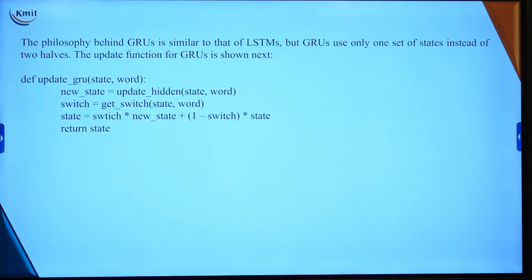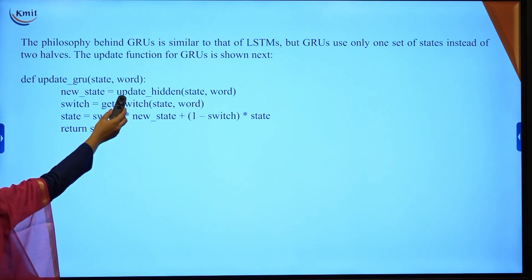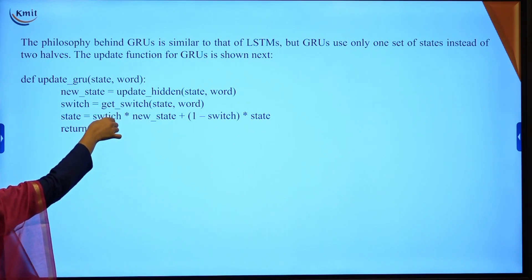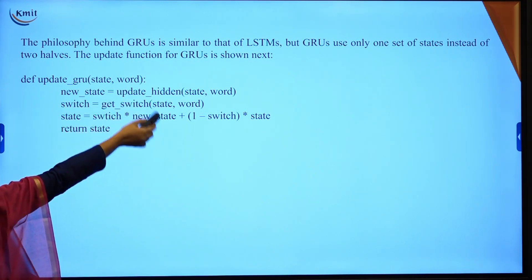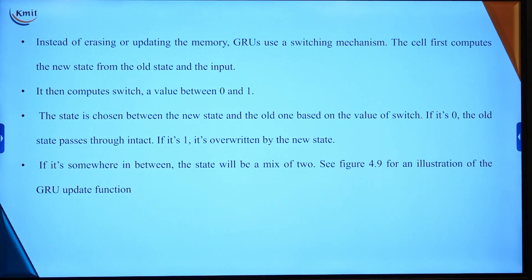The philosophy behind GRUs is similar to LSTMs. We have a switch state — we update the hidden state using a GRU function, taking the previous data and adding the new data. Instead of erasing or updating memory like LSTM, GRU uses a switching mechanism where the cell first computes the new state from the old state and the input.